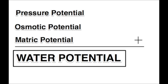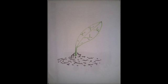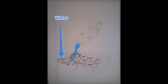Now that we know the terms, the total water potential at any point in the plant is the sum of pressure potential, osmotic potential, and matrix potential. Let us move on to how water moves from the soil, to the plant, and to the atmosphere through stomata.